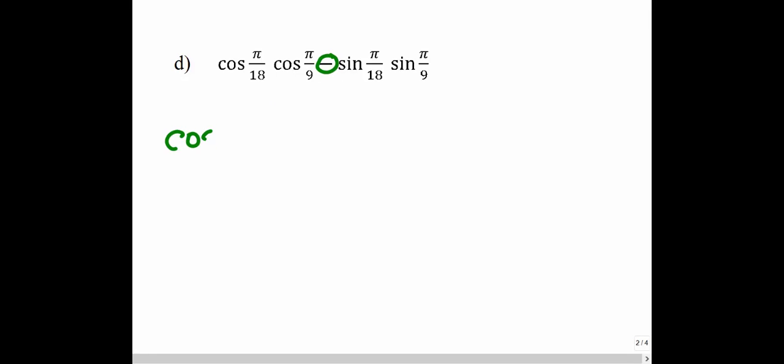We want to find cosine of π/18 times cosine of π/9, minus sine of π/18 times sine of π/9. We can see the familiar pattern for the right side of the cosine identity. Since we're subtracting in between, we will be adding on the inside of the cosine function. The angles are in radians, so let's convert: π/18 equals 180/18, which gives us 10 degrees. 180/9 gives 20 degrees.